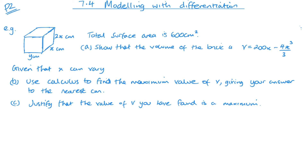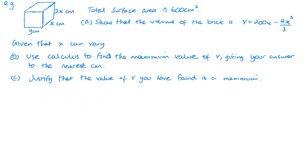It's much easier to go through this with an example, so here's an exam-style question. We've got a cuboid-shaped brick. The total surface area is 600. We need to show what V is, then use calculus to find the maximum value of V and justify it. For part A, we find the volume of a cuboid as length times width times height, giving us y times x times 2x, which is 2x²y.